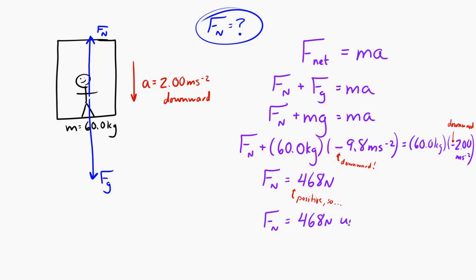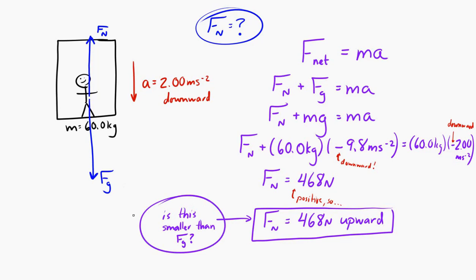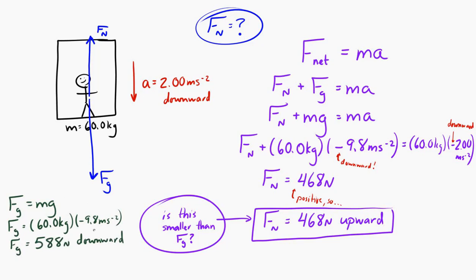It's tempting to say the normal force is downward because the acceleration is downward, but it's not — look at the diagram, the normal force is upward. To verify this makes sense: the weight is m times g, which equals 588 Newtons downward. Comparing that to the normal force of 468 Newtons, the normal force is smaller in magnitude, which is exactly why you feel lighter when the elevator accelerates downward.